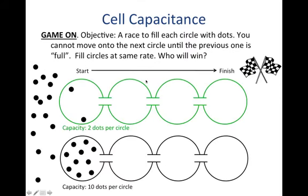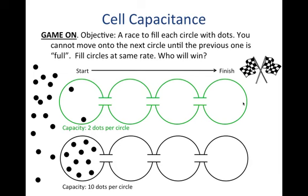A helpful analogy: imagine a game where you must fill dots to progress from left to right. The top row has a capacity of two dots per circle, and the bottom has ten dots per circle. It would be much faster to fill the two-dot circles and finish the race. The key point is that if capacitance is low, it is easier for a wave of depolarization to propagate — in this case, from left to right. So the low-capacitance (green) path would win the race.